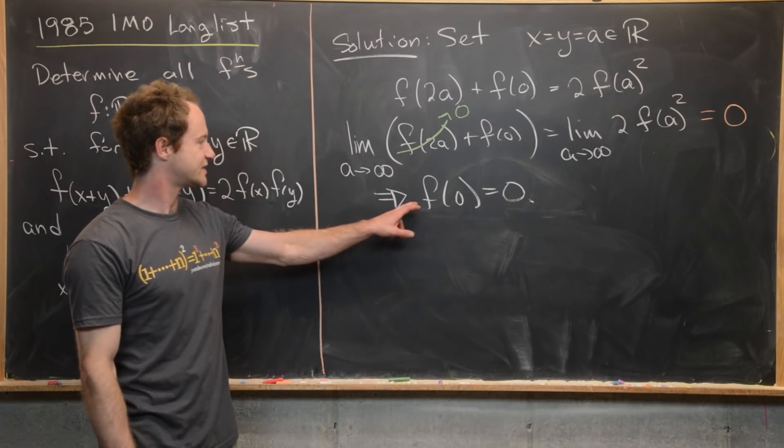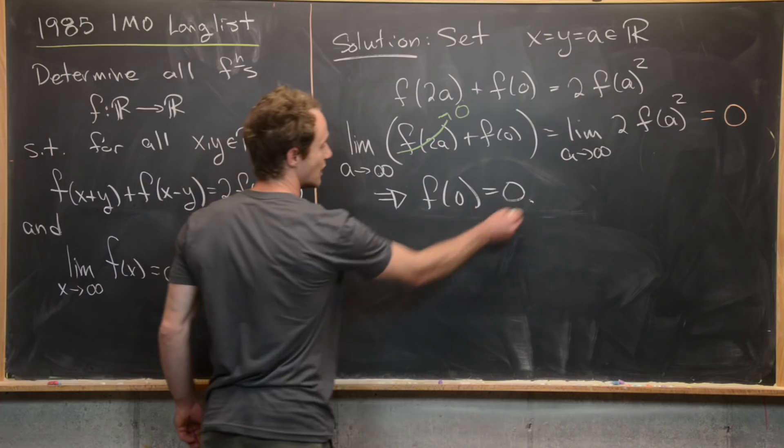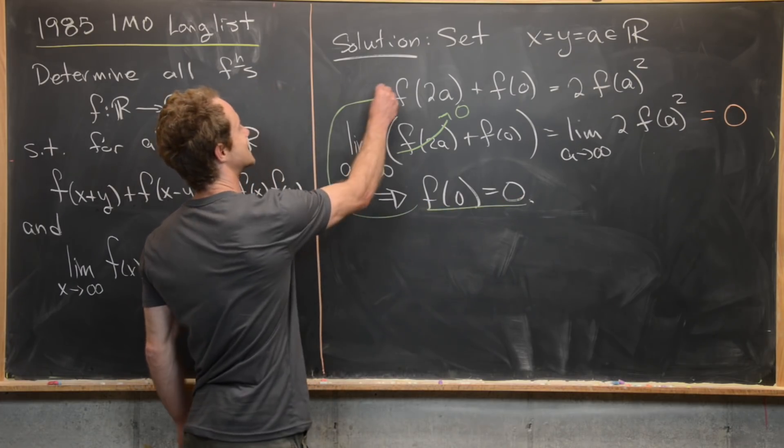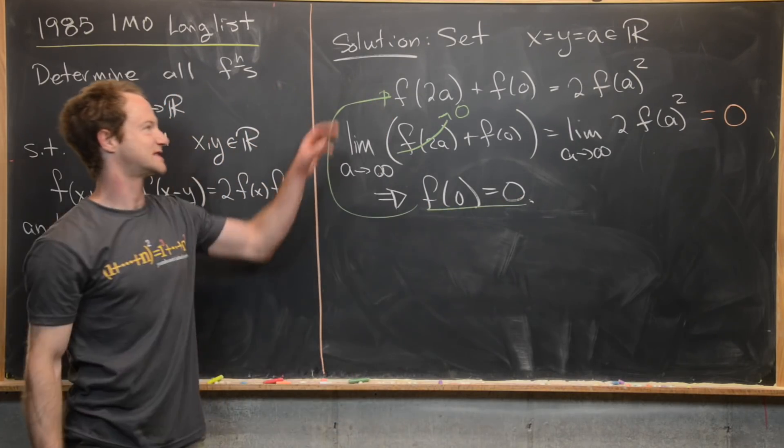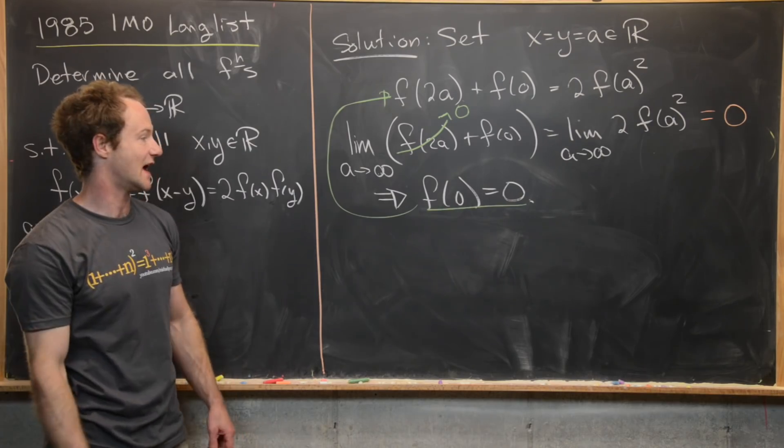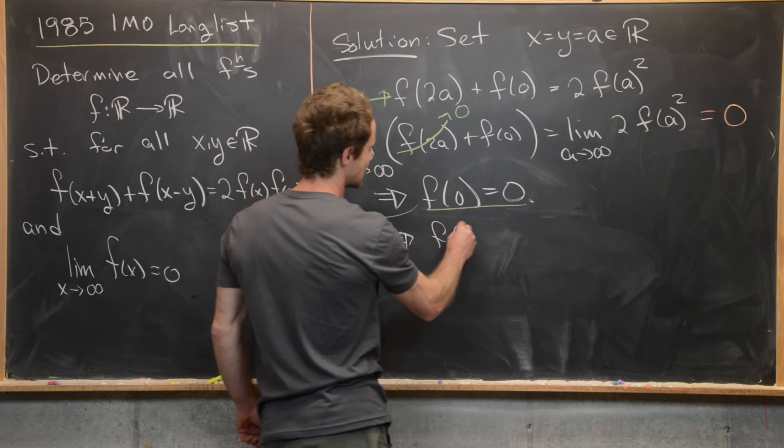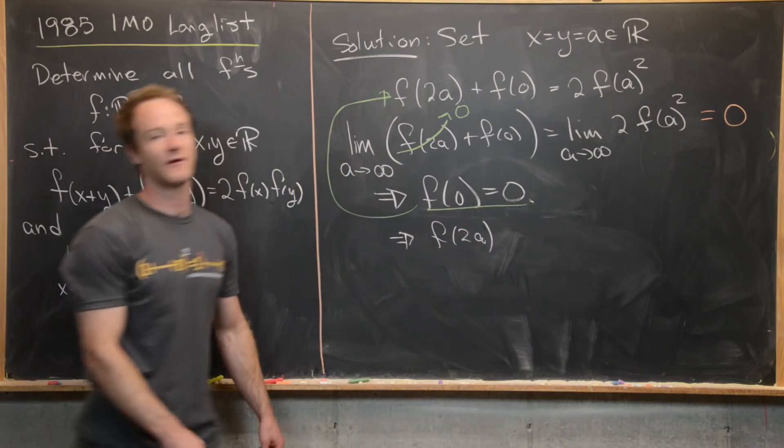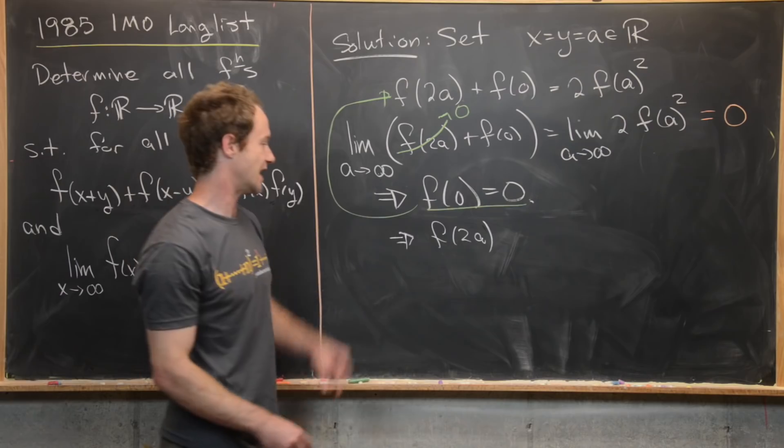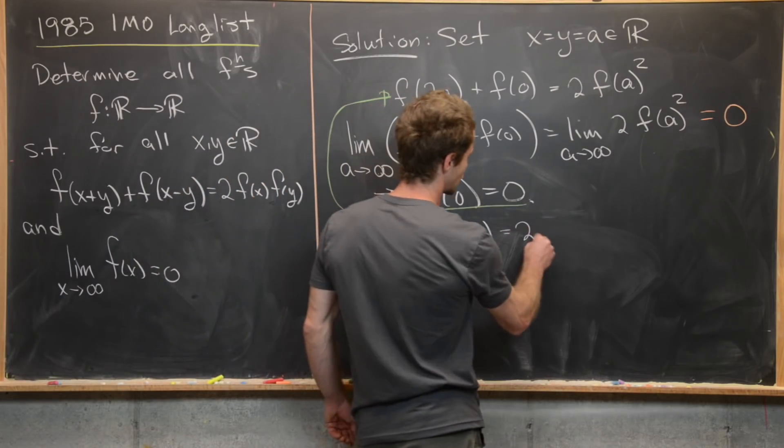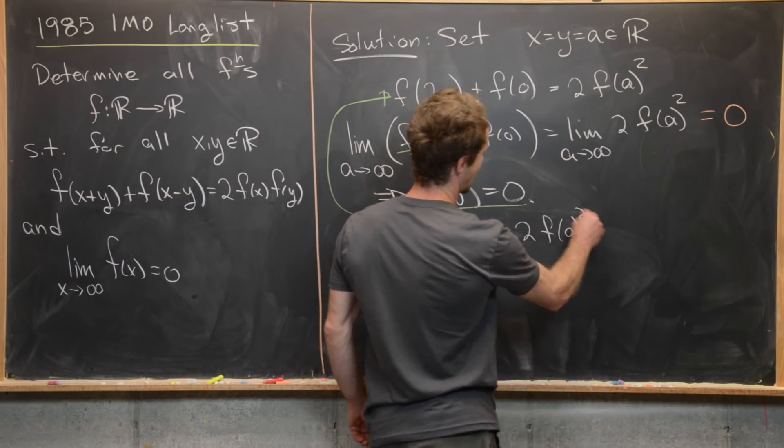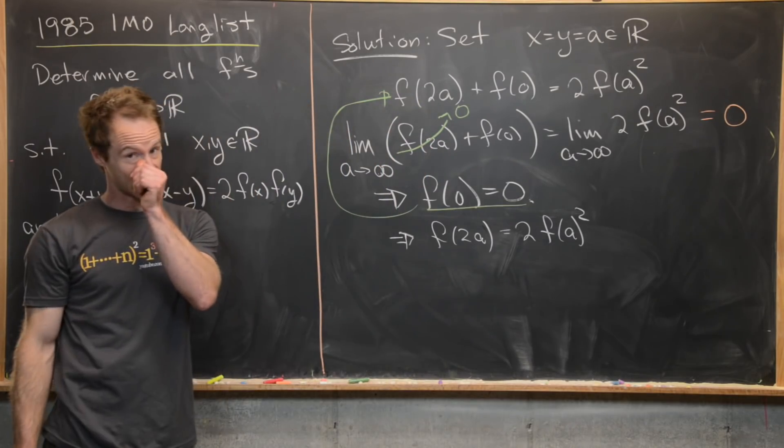Now the next thing that we want to do is swing this value of f(0) back into this equation that we got from setting x and y both equal to a. So if f(0) equals zero, this term cancels, and we immediately have a way of writing f(2a) in terms of f(a). So we have f(2a) = 2f(a)². And that's actually going to be pretty helpful.